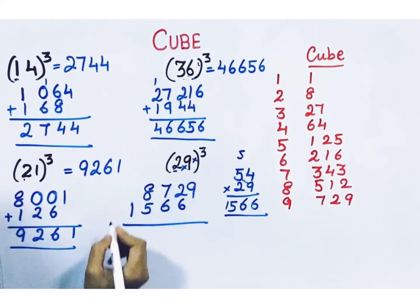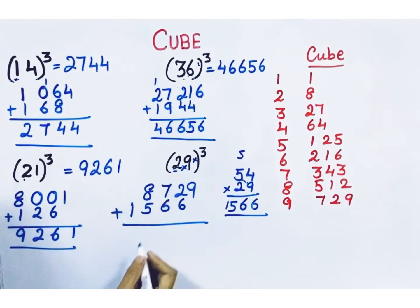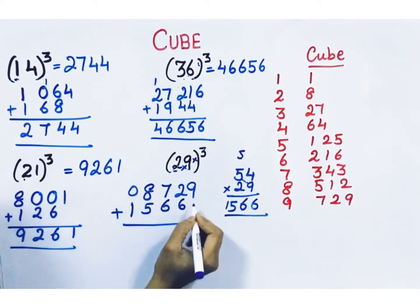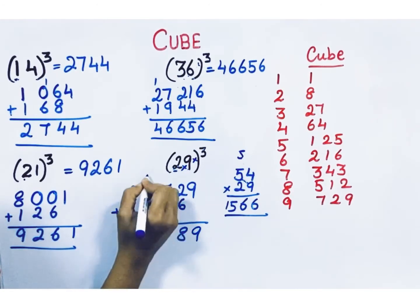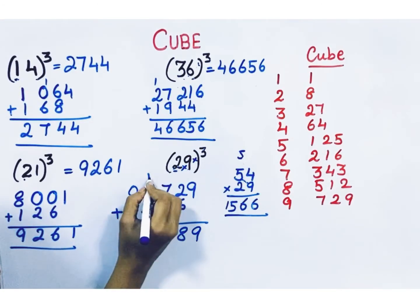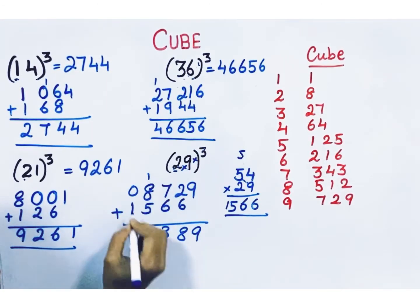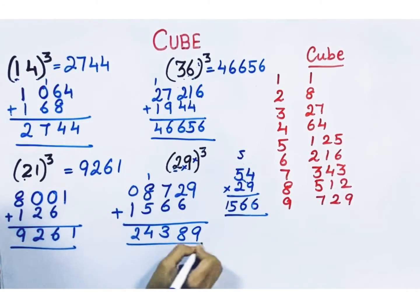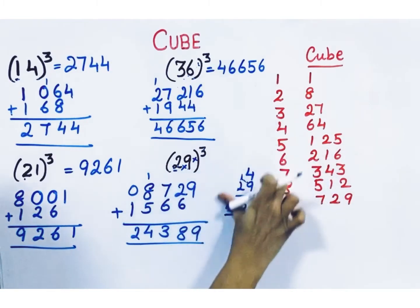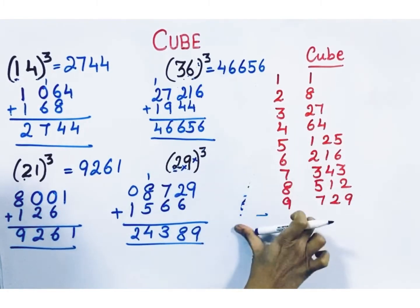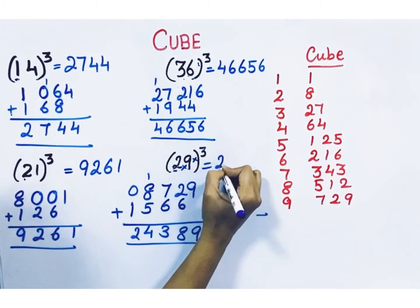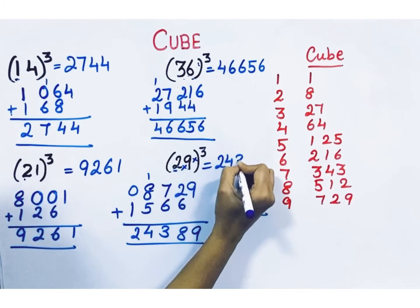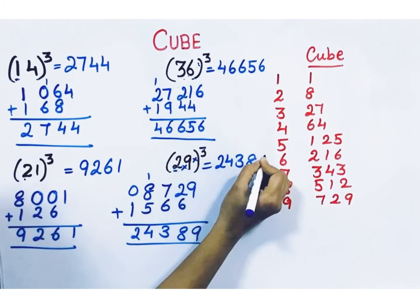Then do the addition. The cube of 29 is 24389.